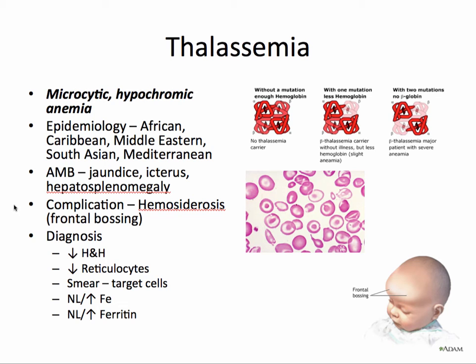A complication of thalassemia is hemosiderosis — this is an excessive supply of iron. This often results in a manifestation referred to as frontal bossing, shown in this image. These patients will present with a low hemoglobin and hematocrit, low reticulocyte count, and the peripheral blood smear will show target cells. Because there's an abnormality in the alpha or beta chain, there are fewer heme molecules and therefore less binding of iron, so the iron and ferritin may be normal or increased, resulting in the hemosiderosis.